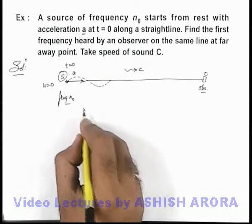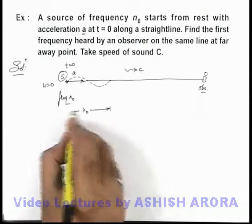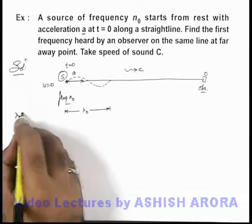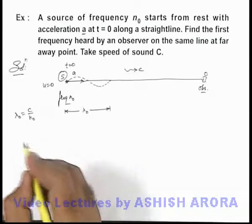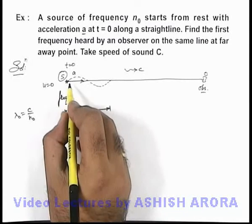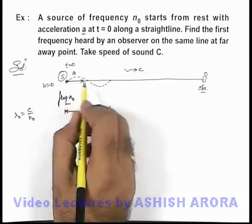Say if its actual wavelength is λ₀, we know well that actual wavelength can be written as c by n₀. And during one oscillation the wavelength is emitted.